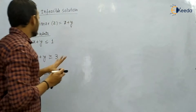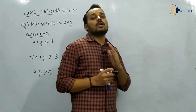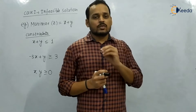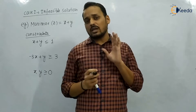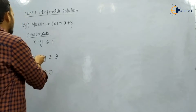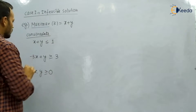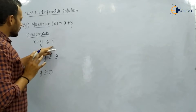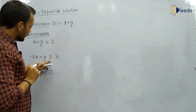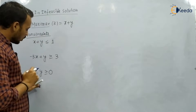Our first case is infeasible solution. With the help of this example, we will understand what an infeasible solution is. Infeasible solution means there will not be any solution to the objective function. We have a maximization type objective function: maximize Z equals x plus y, subjected to two constraints — x plus y less than or equal to 1, and minus 3x plus y greater than or equal to 3. We have a mixed constraint and the decision variables are non-negative.